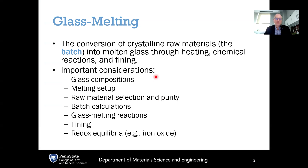There are many different important considerations for glass melting. First is the composition of the glass — we need to make sure that we get the right combination of batch materials and quantities so that when melted, they produce the desired glass composition. Next is the melting setup, including the operating temperatures of the furnace and the refractory material of the furnace walls. Next is raw material selection and purity — we need a sufficient quantity of batch materials with sufficiently high purity and an appropriate grain size distribution.